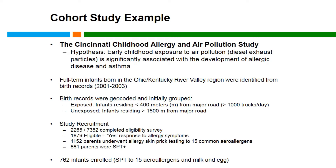Let's go through an example of a cohort study — the Cincinnati Childhood Allergy and Air Pollution Study. The hypothesis is that early childhood exposure to air pollution, specifically diesel exhaust particles, is significantly associated with the development of allergic disease and asthma in childhood. The study consisted of full-term infants born in the Ohio-Kentucky River Valley region, identified from birth records in 2001 to 2003. Those defined as exposed were infants residing less than 400 meters from a major road, and the unexposed were infants residing greater than 1,500 meters from a major road, followed prospectively for the development of allergies and asthma.